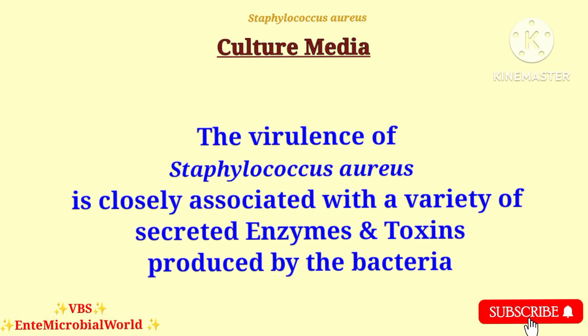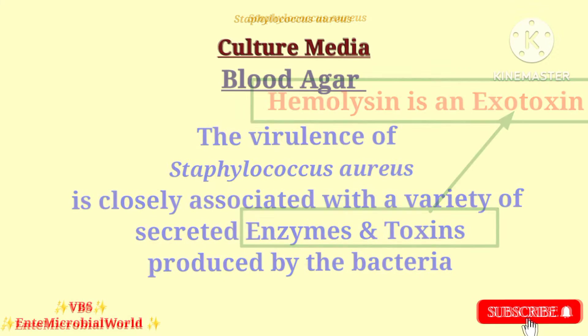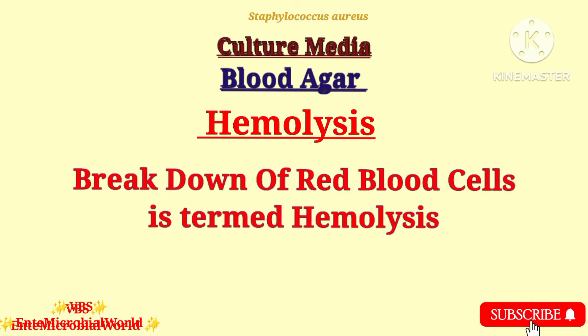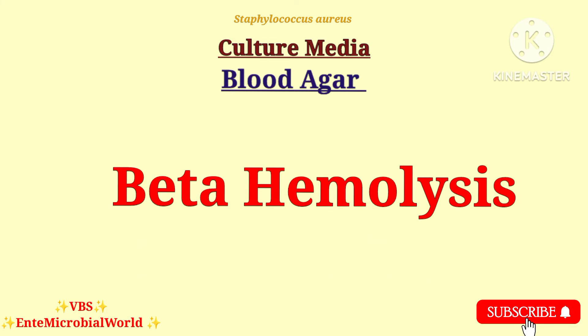These hemolysins radially diffuse outwards from the colonies causing complete or partial destruction of the red cells in the medium and complete denaturation of hemoglobin within the cells to colourless products. The virulence of Staphylococcus aureus is closely associated with a variety of secreted enzymes and toxins produced by the bacteria. Hemolysin is an exotoxin.